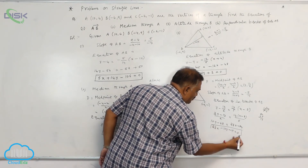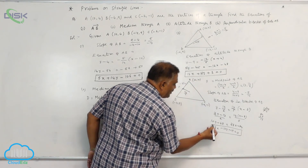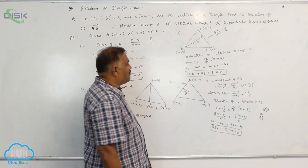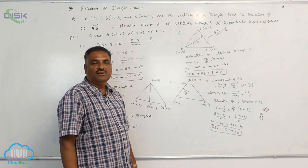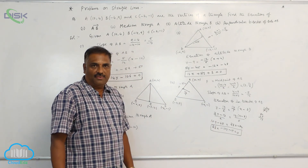This is the equation of the perpendicular bisector of side AB.